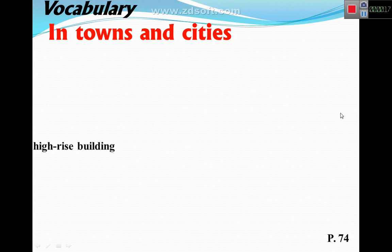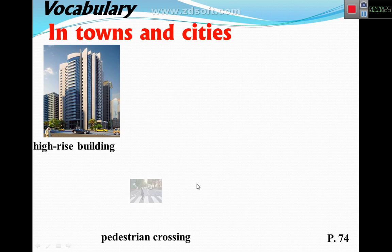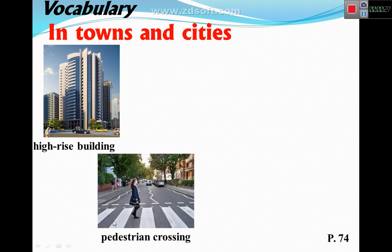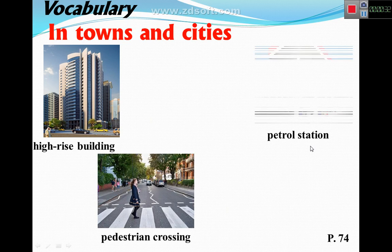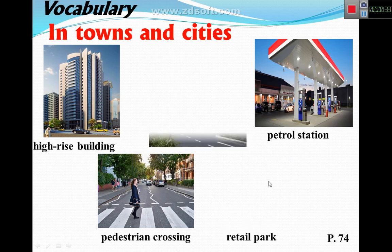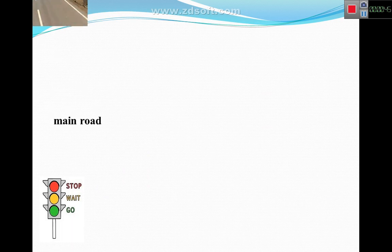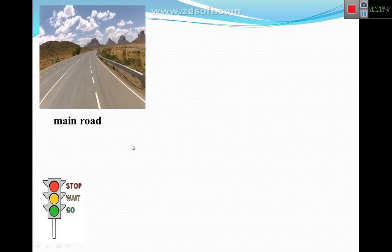High-rise building means a very tall building, like skyscrapers. Pedestrian crossing — this is a pedestrian crossing road. Petrol station is where cars get petrol. Retail park — this is a retail park, a shopping retail park.